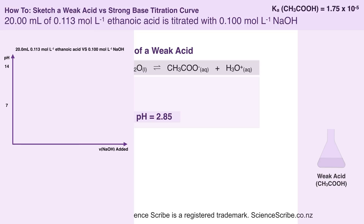When I sketch my titration curve, I want my vertical axis to show pH, while my horizontal axis I'm going to label as the volume of sodium hydroxide I've added. Since I have added no sodium hydroxide at zero mils, this means my starting pH will be 2.85.